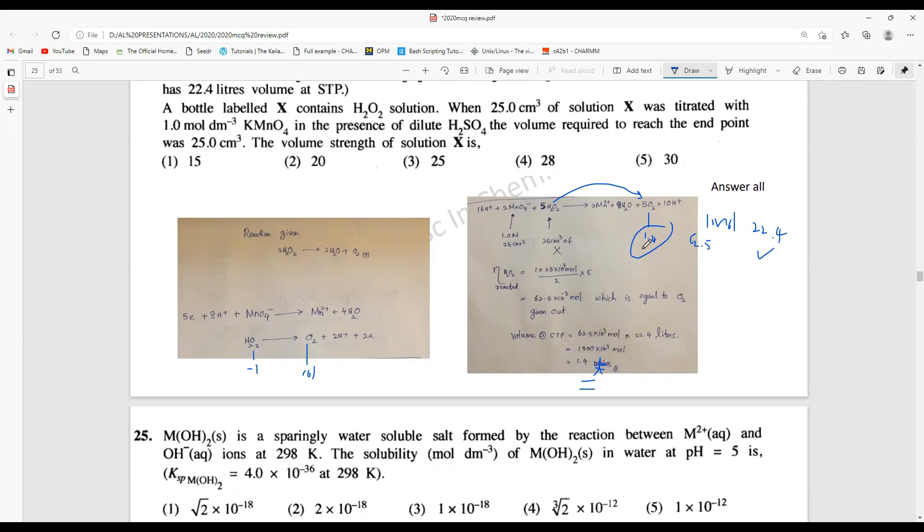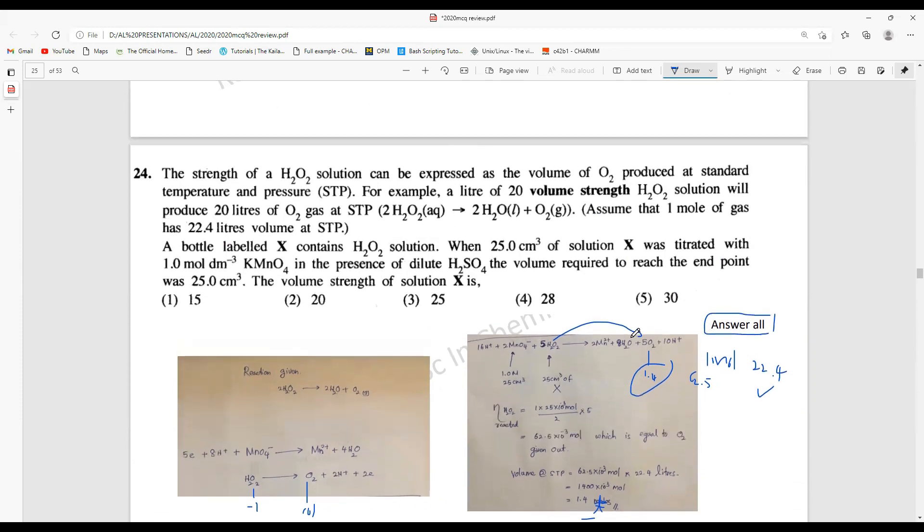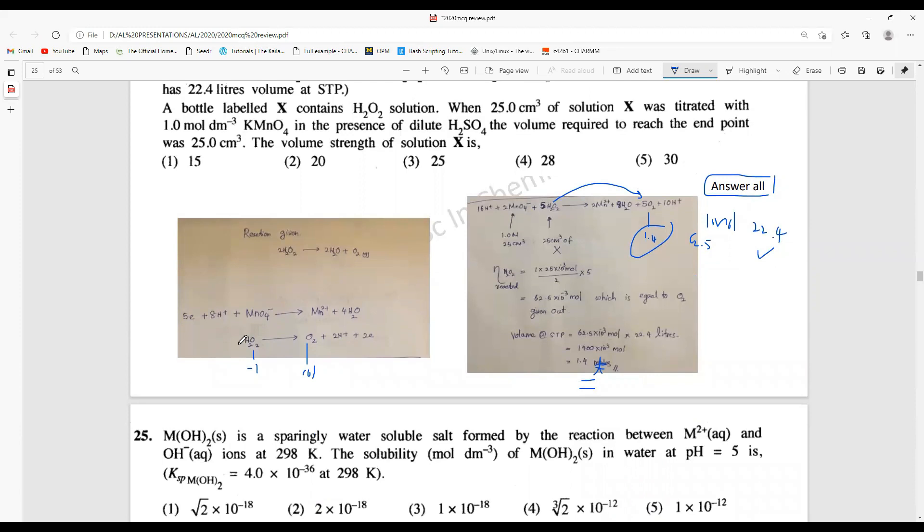If this is 1.4, the volume strength of the solution would be like 1.4. But actually this is not the problem. One thing is I don't see an answer for this one. But the real reason behind this, I guess the answer is given as all, I have taken this H2O2 oxidation as this one.